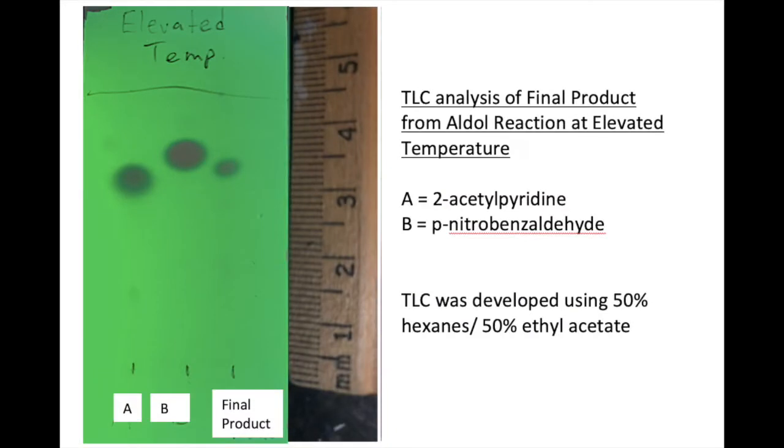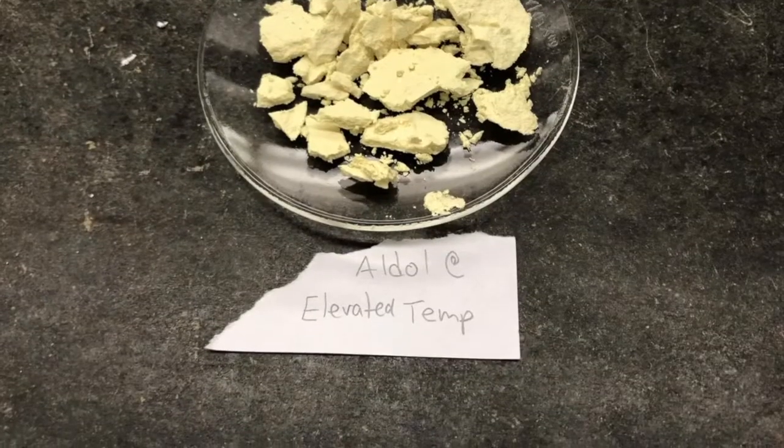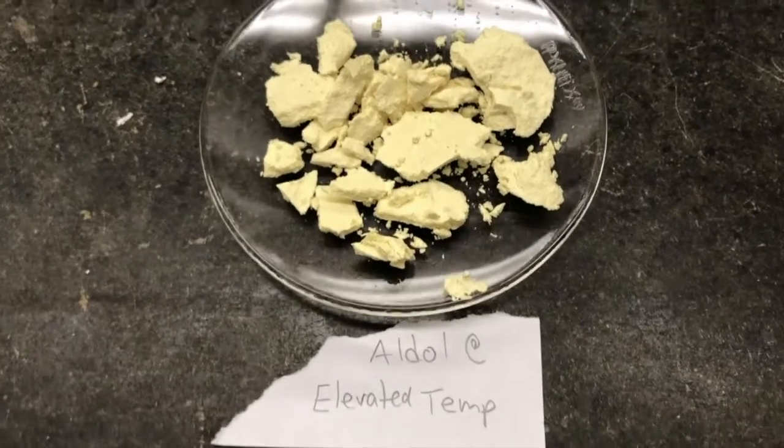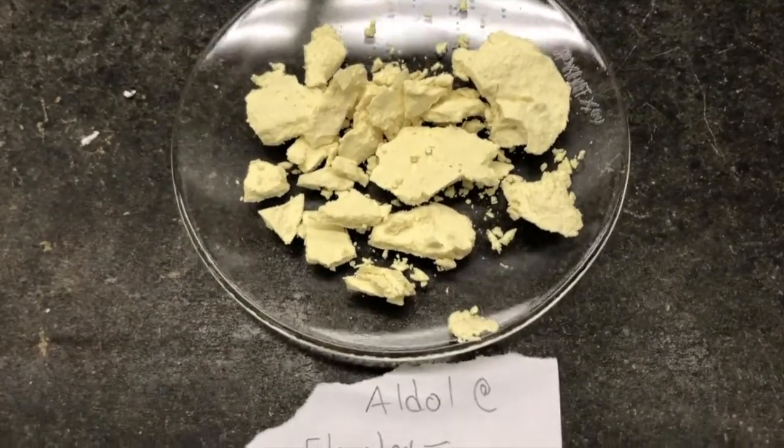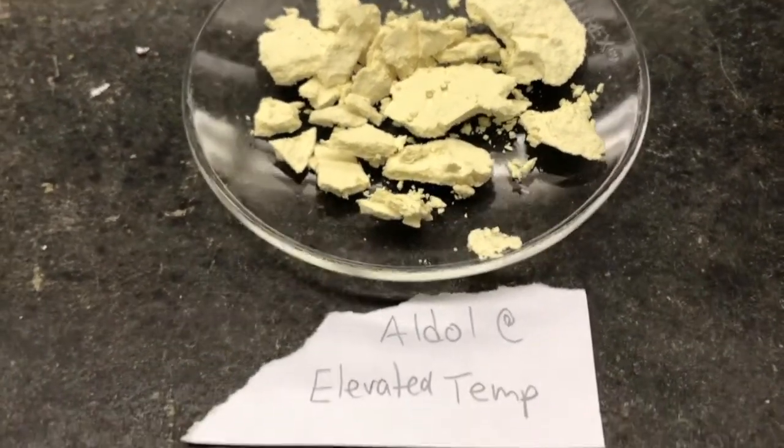So while our product kept drying, we took one last TLC plate of our final product. On this TLC plate, you can clearly see that the starting materials are different than the product that we isolated. But to confirm that, we're going to use melting point as well as IR. Here's what the reaction product looked like after we let the product dry for a few days.